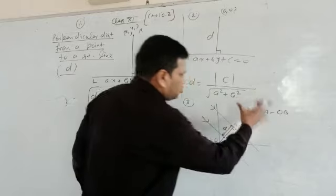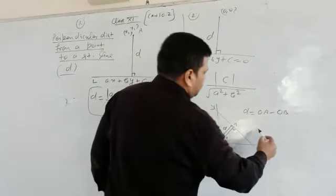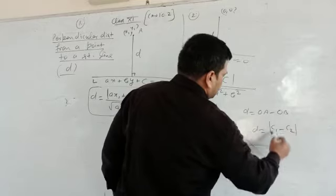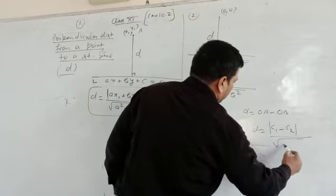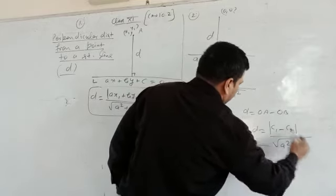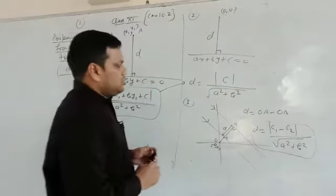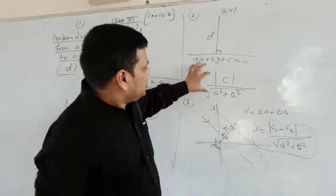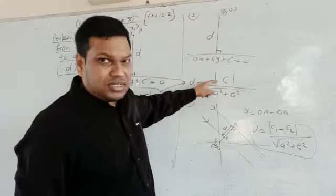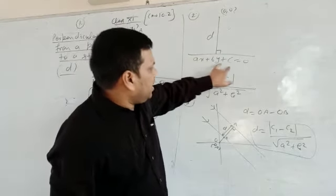And if you solve it, you will find that the distance will be given as C1 minus C2 upon root A square plus B square. Because this distance is from origin to a line.